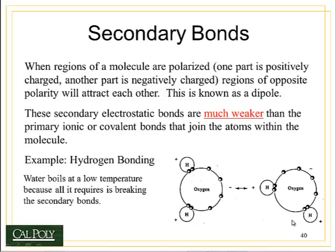Hello, and this is part six of topic two, atomic bonding. The last type of bond we're going to look at is the secondary bond. There's a group of bonds that fall into the category of secondary bonds, and they include hydrogen bonding, dipoles, and van der Waals forces.